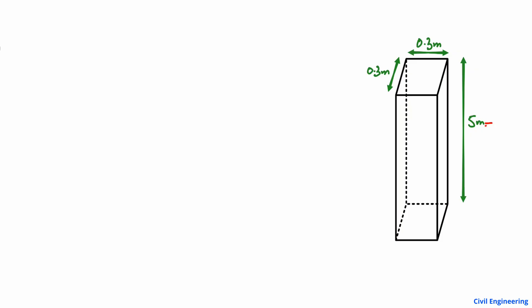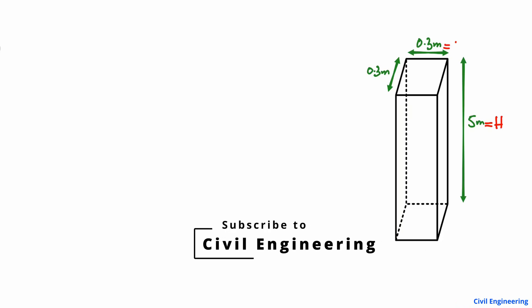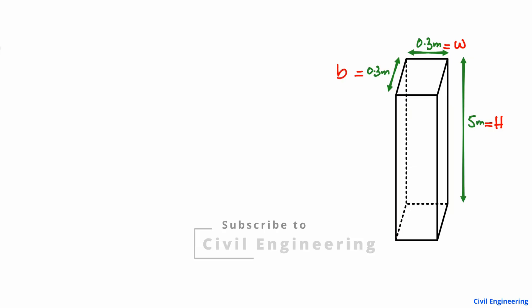The length or height of the column is 5 meters. The other two dimensions — the width and the breadth of the column — are 0.3 meter and 0.3 meter. So it is a square kind of column. If you draw the cross-section, one is the width and one is the breadth, both 0.3 meter, so it's a square column.